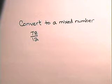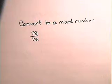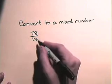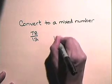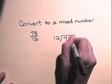Now let's look at this improper fraction and convert it to a mixed number. You will notice that it is an improper fraction — the numerator is larger than the denominator. In order to convert the improper fraction to a mixed number, we will divide the denominator into the numerator. We will divide twelve into seventy-eight.